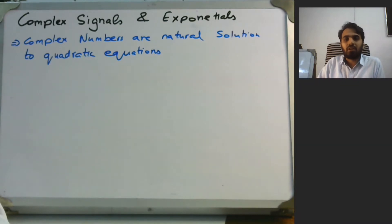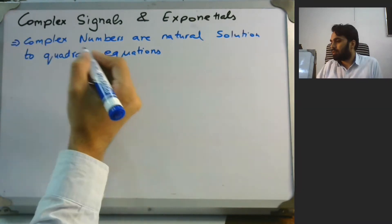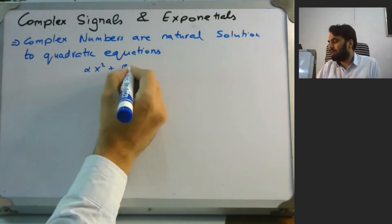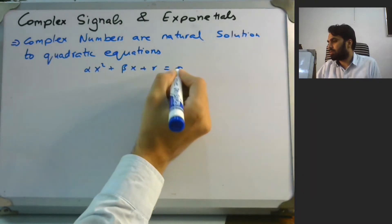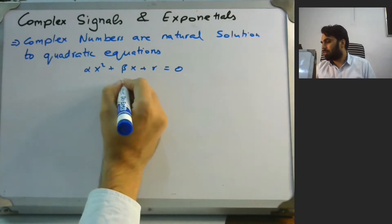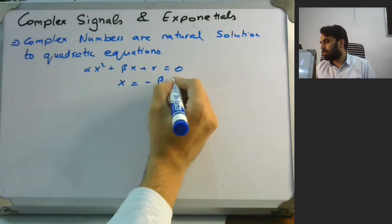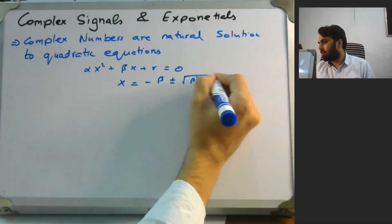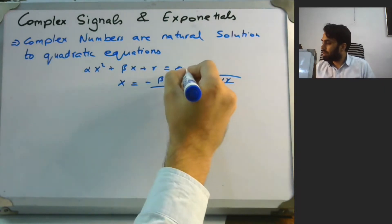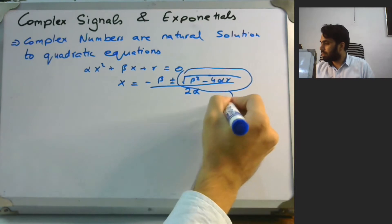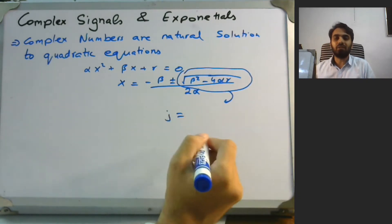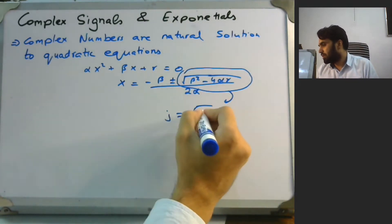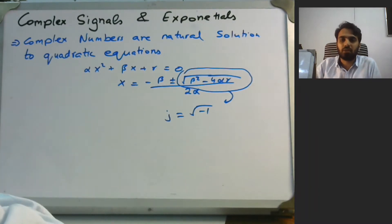Complex numbers are a natural solution to quadratic equations. If you have a quadratic equation, say alpha x squared plus beta x plus gamma equals zero, you can find the solution by writing x equal to minus beta plus or minus the square root of beta squared minus 4 alpha gamma, all over 2 alpha. From here we have complex numbers, referred to as j in engineering or i in sciences, arising from the square root of minus one.